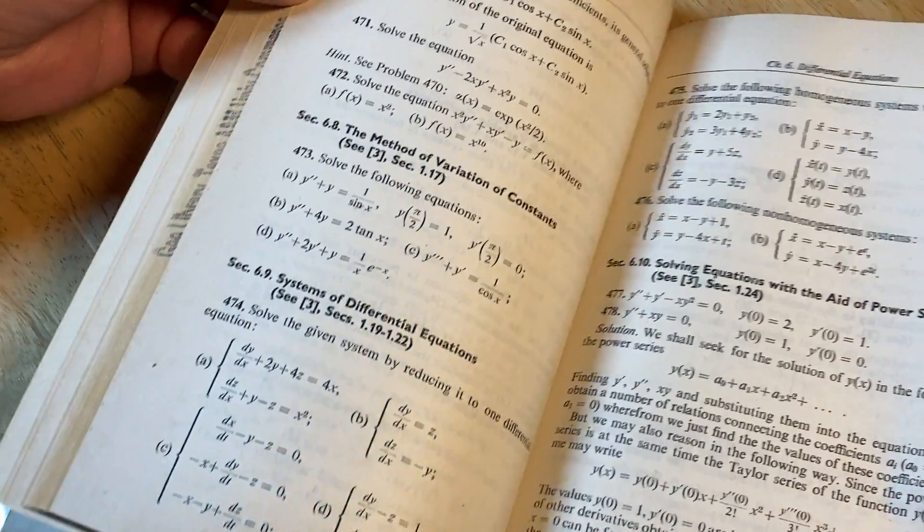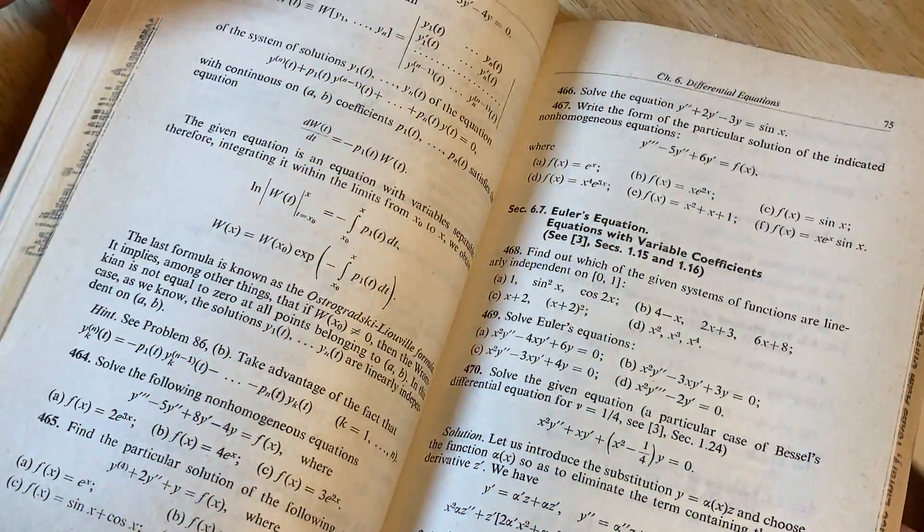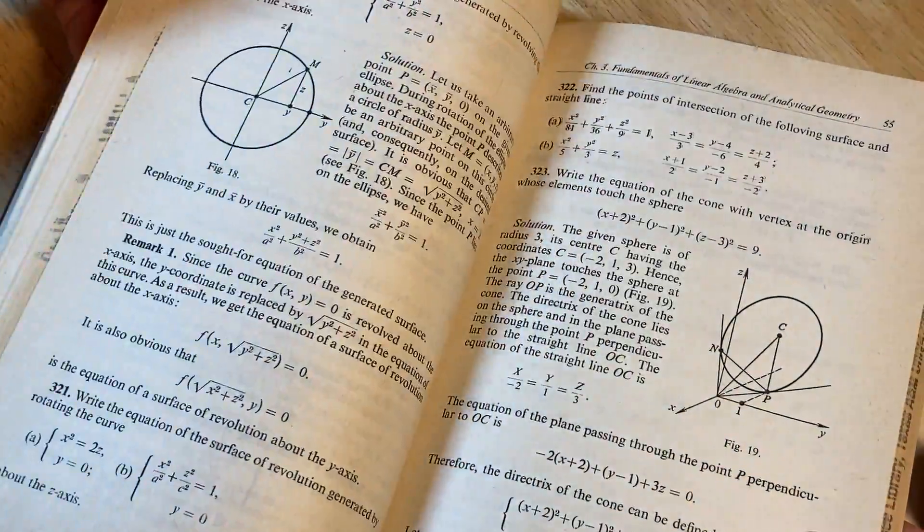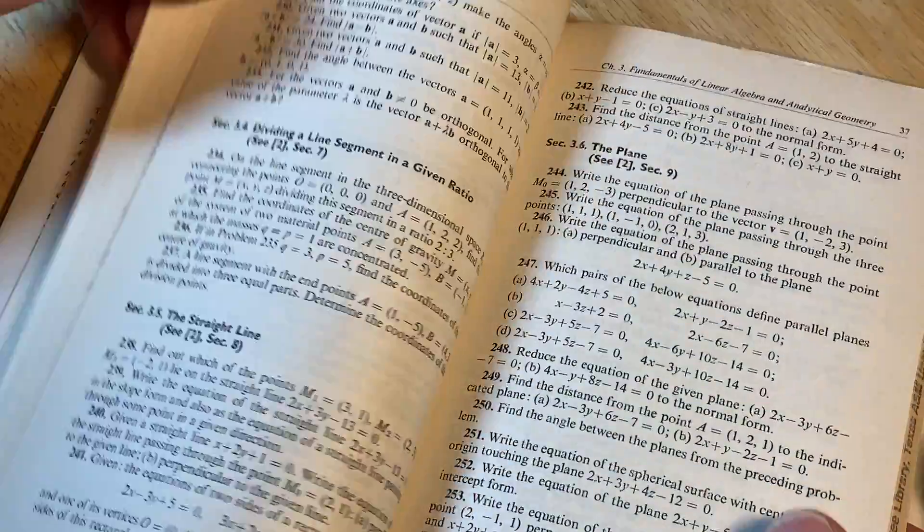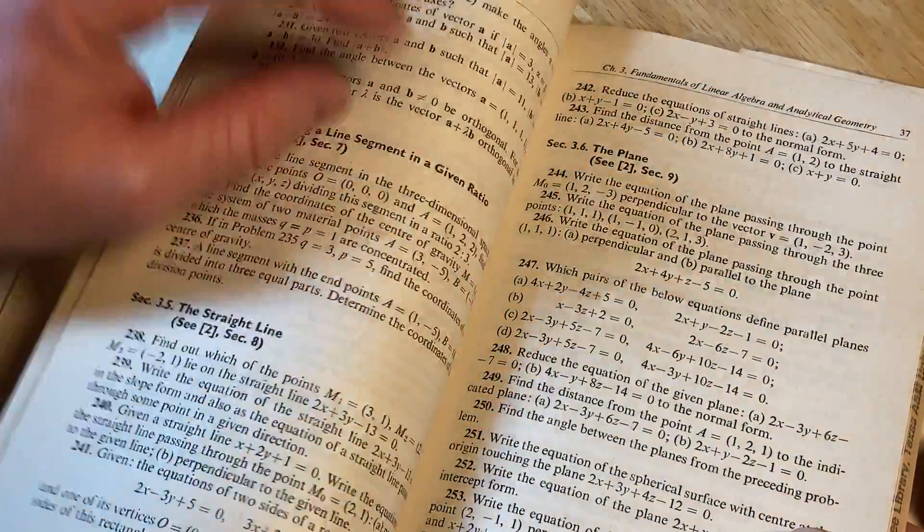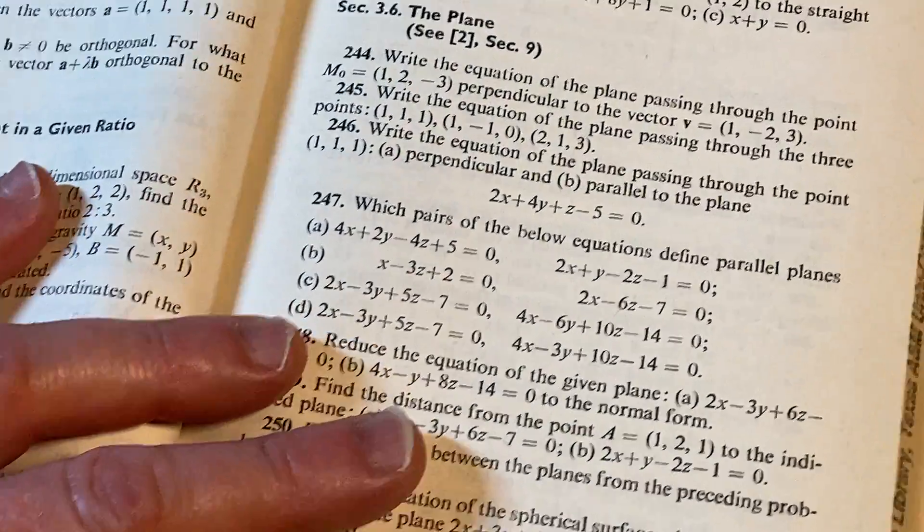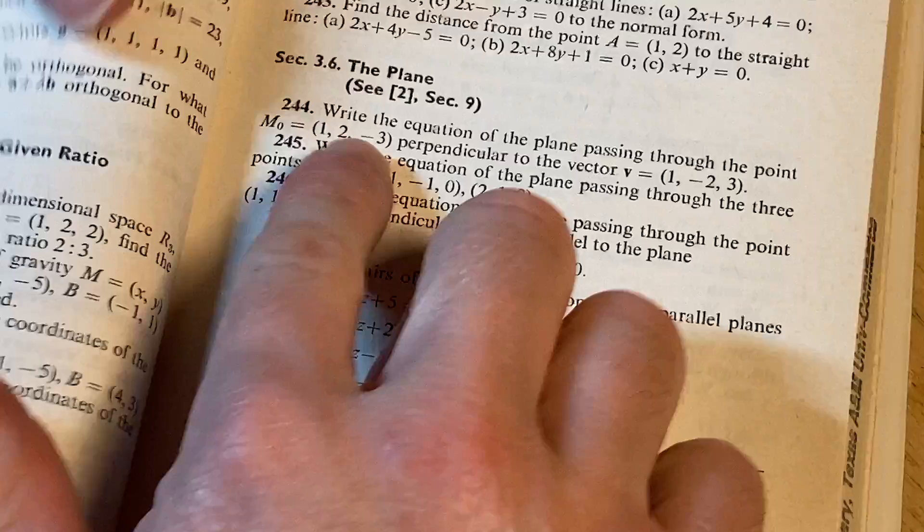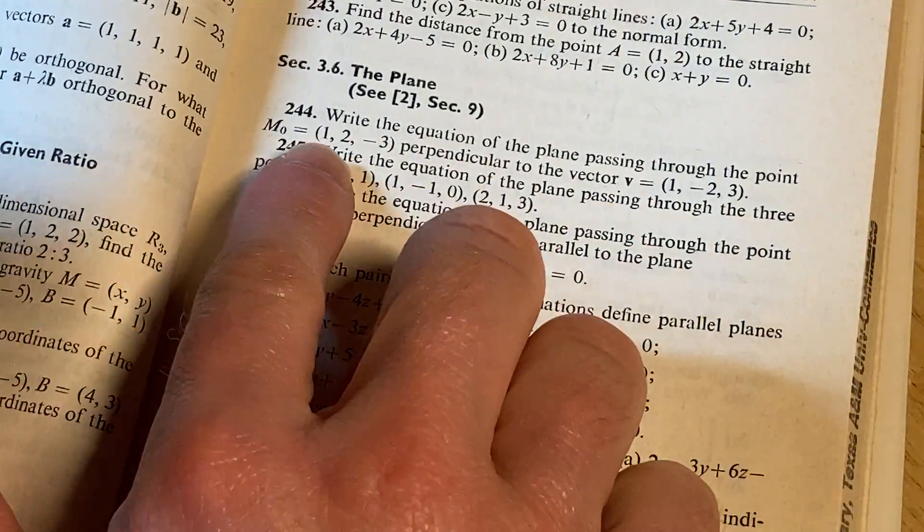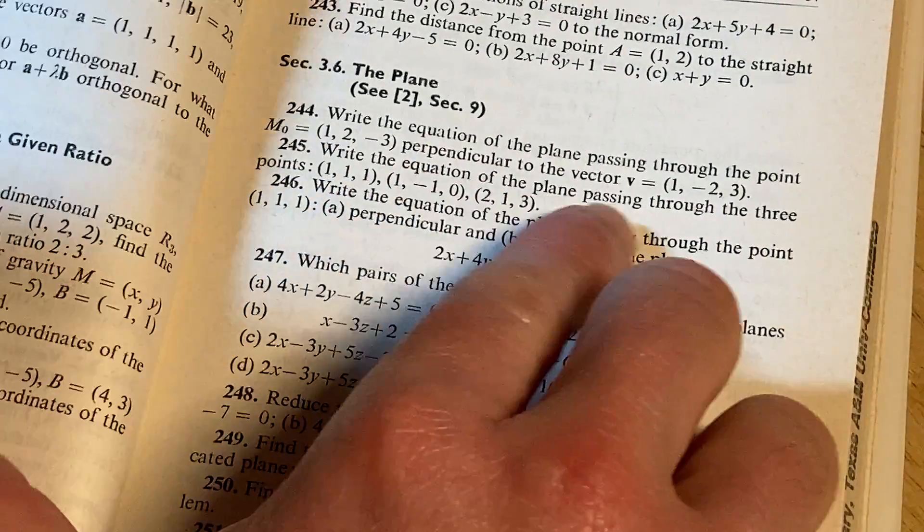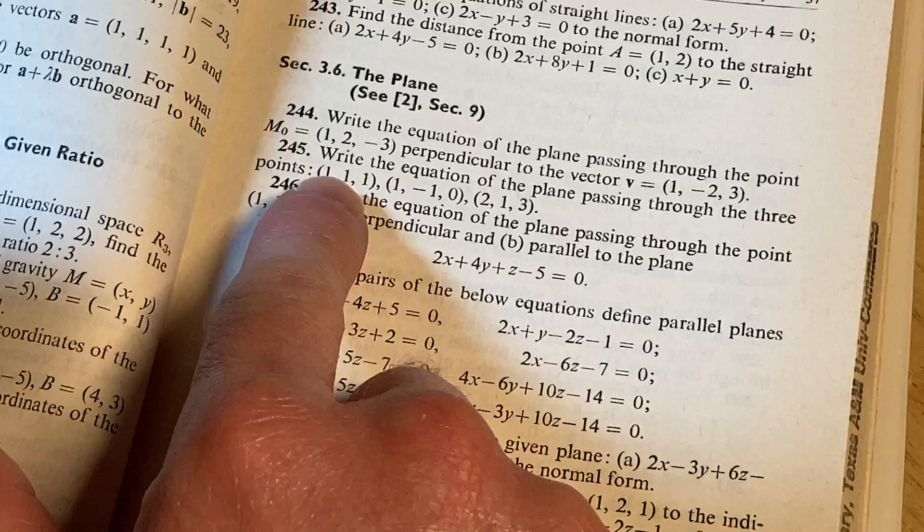Systems of differential equations, Euler's equation, the plane. Oh, these are fun. So you do these and you take calculus three, you'll see some of this stuff. Write the equation to the plane passing through the point one, two, negative three perpendicular to the vector. Oh, that's really simple.